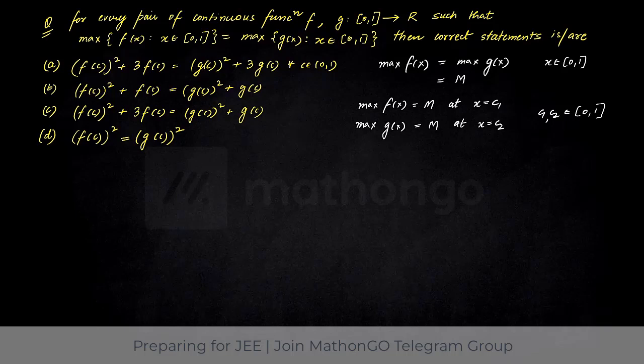And also at the same time, you can say that sir, the maximum could occur at different values. Yes, that is also a possibility that f(x) takes value M not at the c1, maybe at c3 and c4 as well. But at least we can say there will be one such value. Till that point, this is clear.